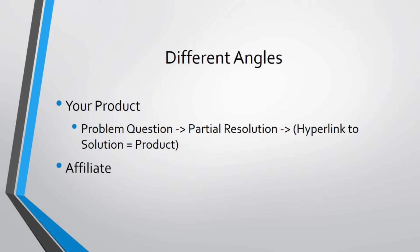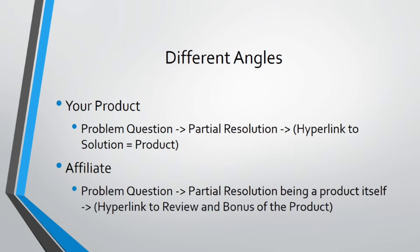If you chose the affiliate route in the previous video, it's going to be slightly different because you're selling somebody else's product. I find that both product and affiliate marketing start out with problem questions — some sort of question that engages the audience. You can ask other questions along the way. We have problem question, partial resolution, and then you can provide content.